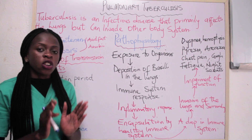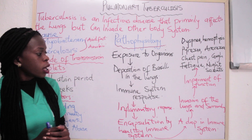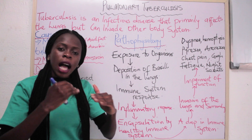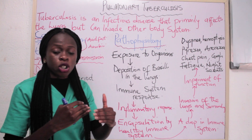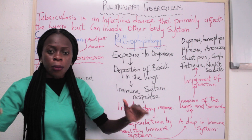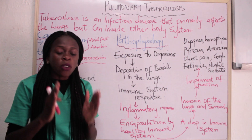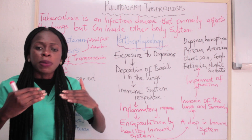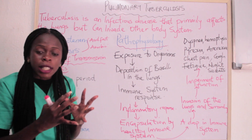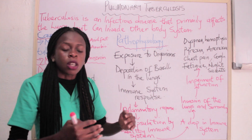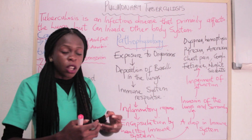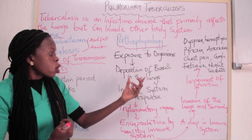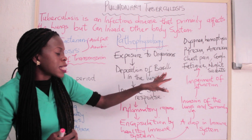In terms of the pathophysiology of pulmonary tuberculosis, what happens first is that an individual is exposed to Mycobacterium tuberculosis when someone coughs or sneezes. When there is exposure to the organism, that person inhales it, and there is deposition of bacilli in the lungs.